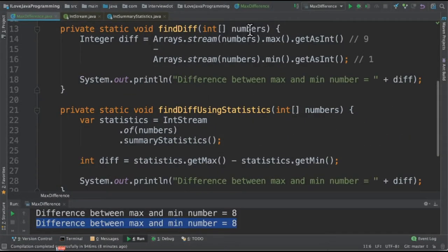In the first method I'm going to take this array and convert into a stream and get the maximum value which is 9 from this array and then I'm also going to get the minimum value from this stream. Finally we are going to calculate the difference.